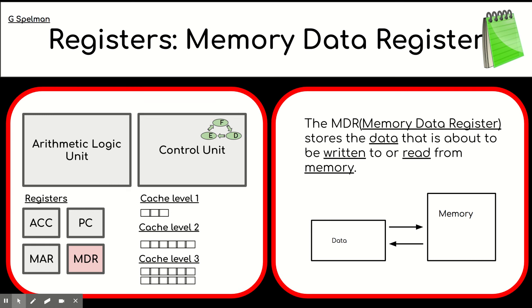When data is fetched, that's put into the memory data register. If the CPU needs to write some data into a location in memory, that first goes into the memory data register.